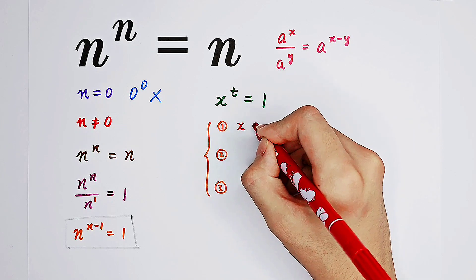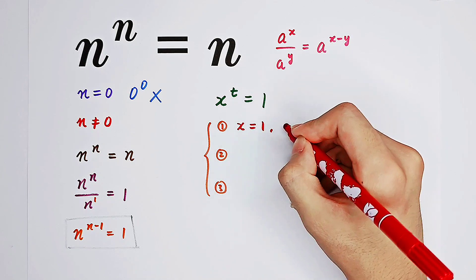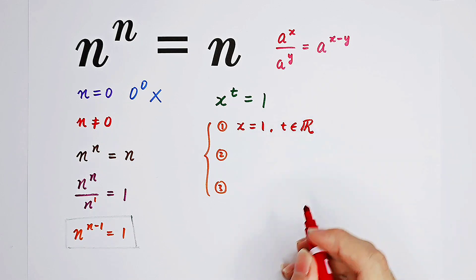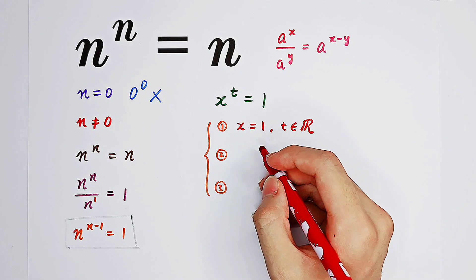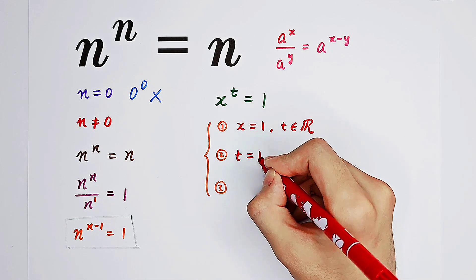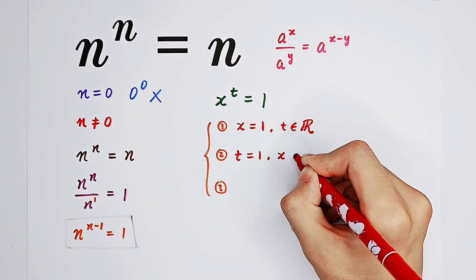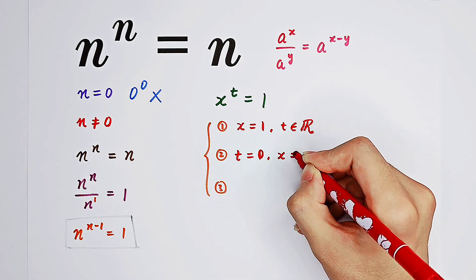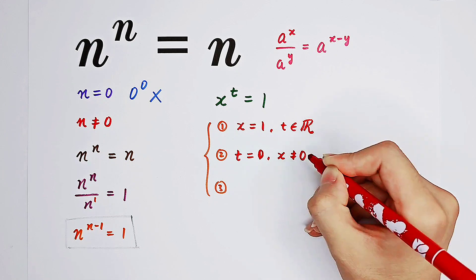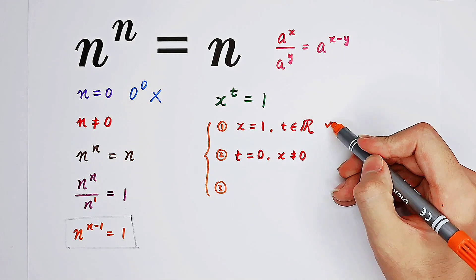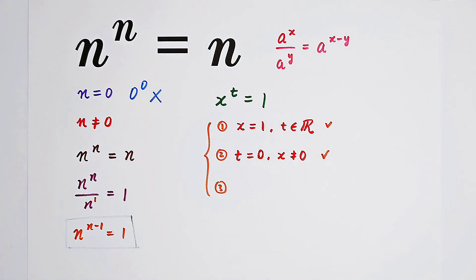Firstly, if x equals 1, t can be any real number. Secondly, if t equals 0, then if x is not 0, this equation also holds. So in these two cases, the equation successfully holds, and there are not so many conditions.